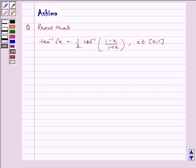Hello and welcome to the session. Let us understand the following problem. Tan inverse square root x is equal to half cos inverse of 1 minus x by 1 plus x, where x belongs to the closed interval 0,1.